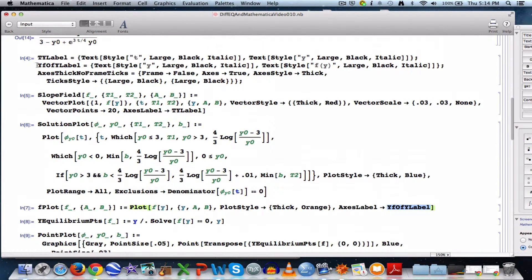That labels axes y and f of y. That's why I called it y f of y label. That's how you should read that, y f of y label. That's stored in that, that comes from this code right here, storing this labeling in that variable. I also use this kind of stuff a lot, frame arrow false, axes arrow true, et cetera. I'm storing that information in this variable called axes thick no frame ticks. Kind of fun names here.